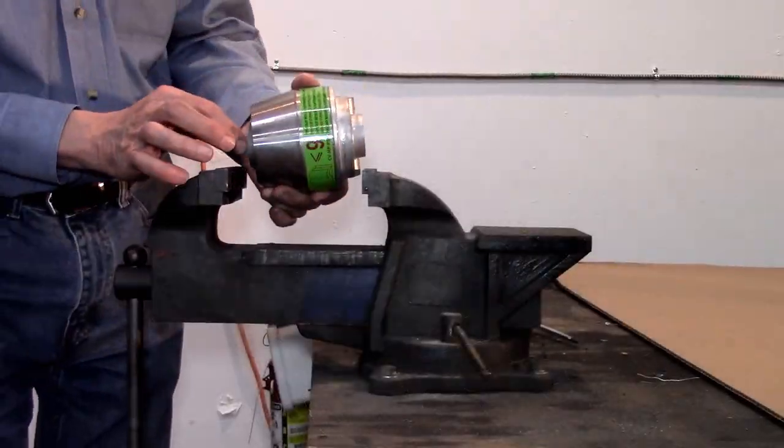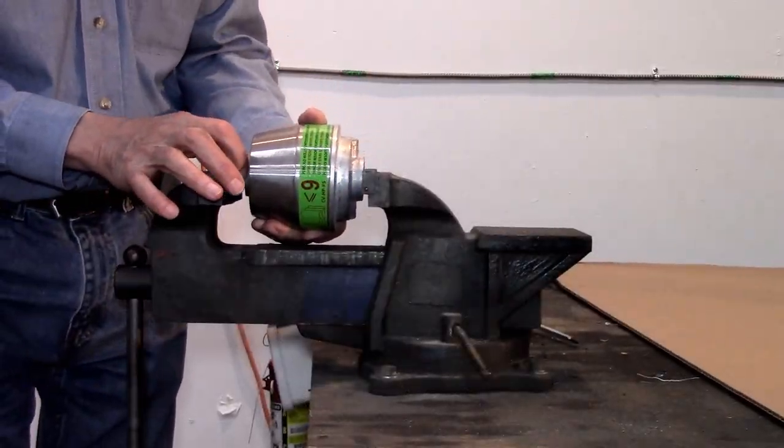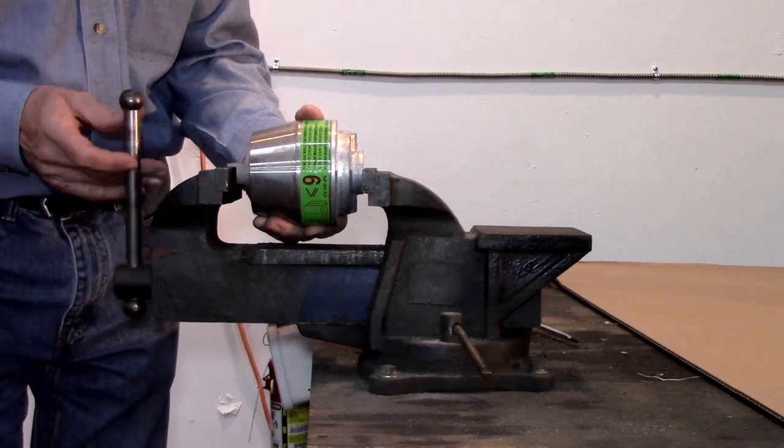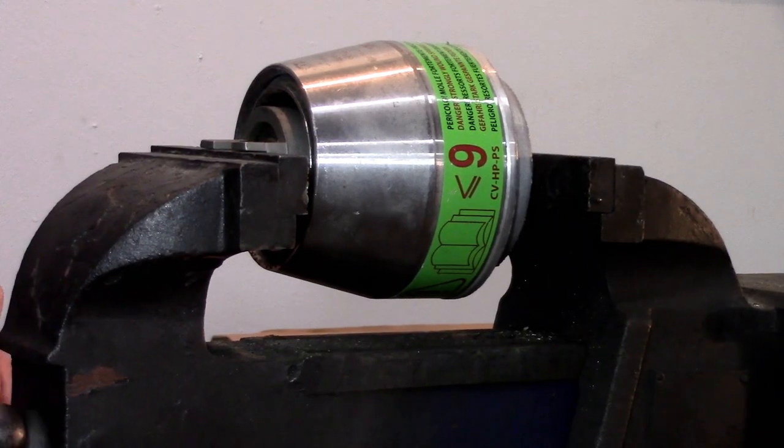Place against the fixed jaw of your vise the face of the clutch that is closest to the engine. The movable vise jaw is then positioned to exert pressure against the throw-out bearing.